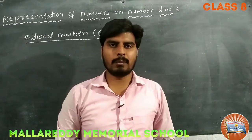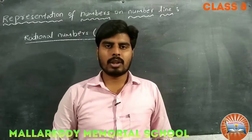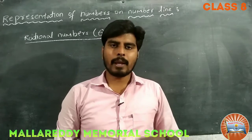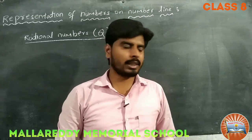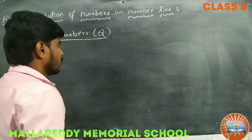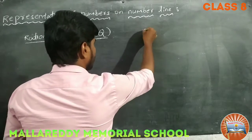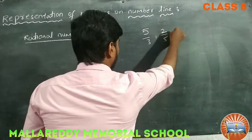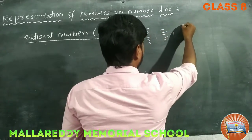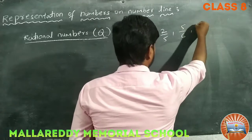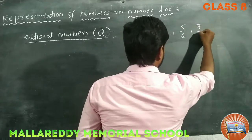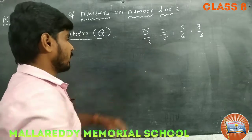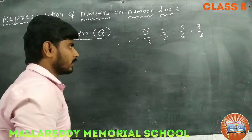Now, representation of rational numbers. The rational numbers representation is a little bit trickier than the remaining number sets. Look at the examples first: 5 by 3, 2 by 5, 5 by 6, 7 by 3. So these are some examples of rational numbers.